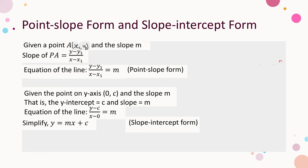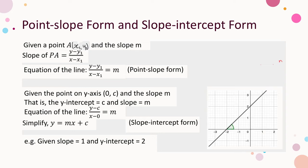The slope-intercept form is a well-accepted form; we don't need to convert it back to the general form unless otherwise specified. This form also helps us to sketch the graph of the line. For example, given slope = 1 and y-intercept = 2, we mark the point (0, 2) and convert slope 1 into the angle of inclination 45°. Then the line can be sketched easily, and the equation is y = x + 2.